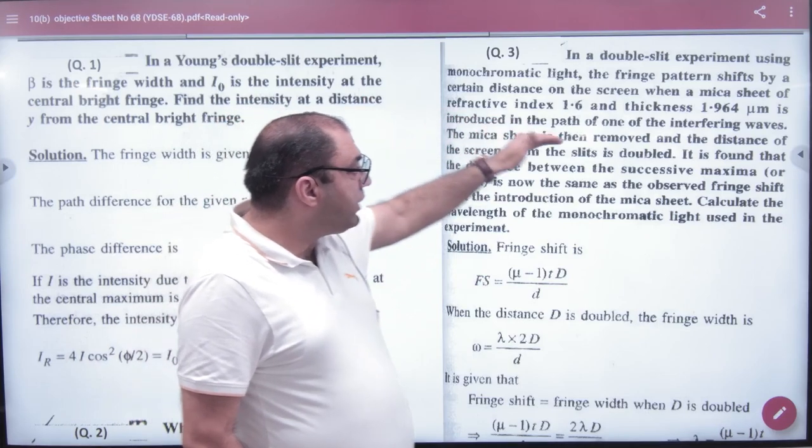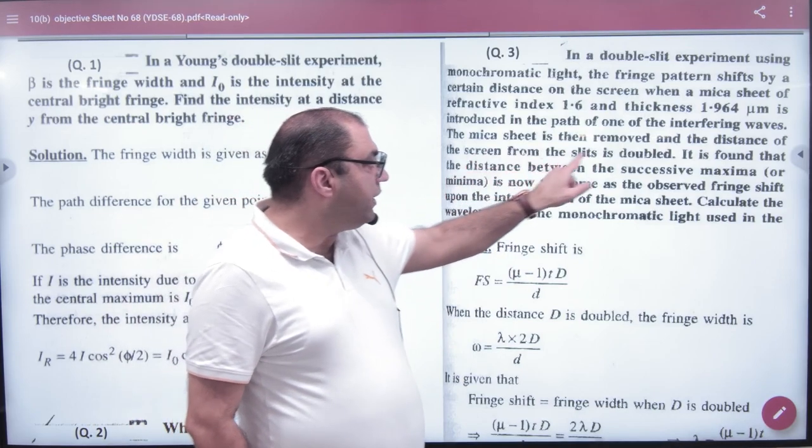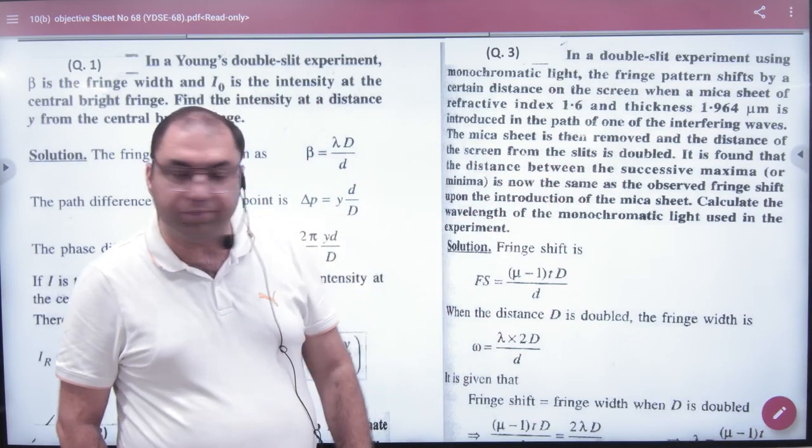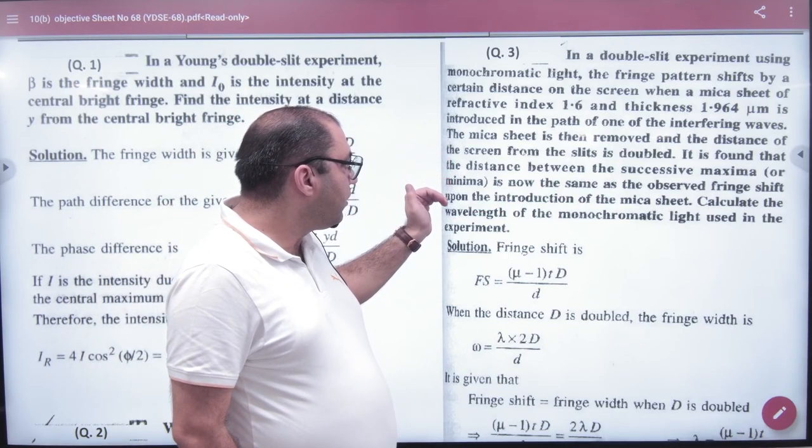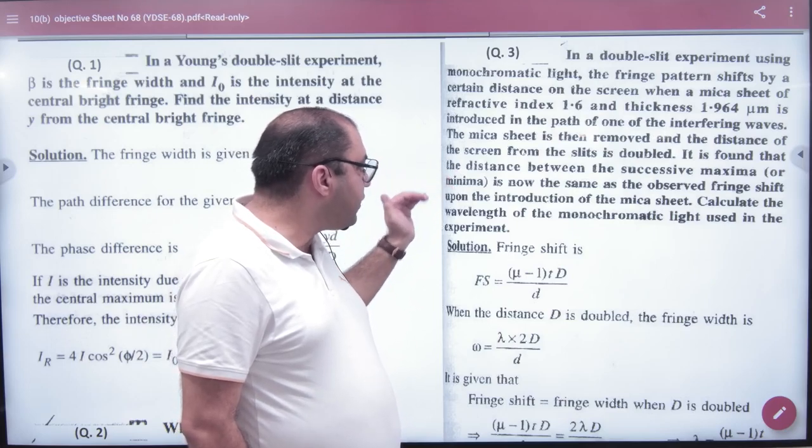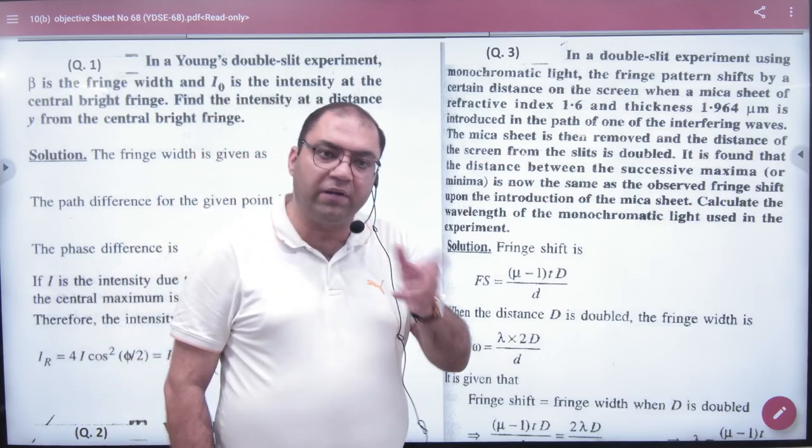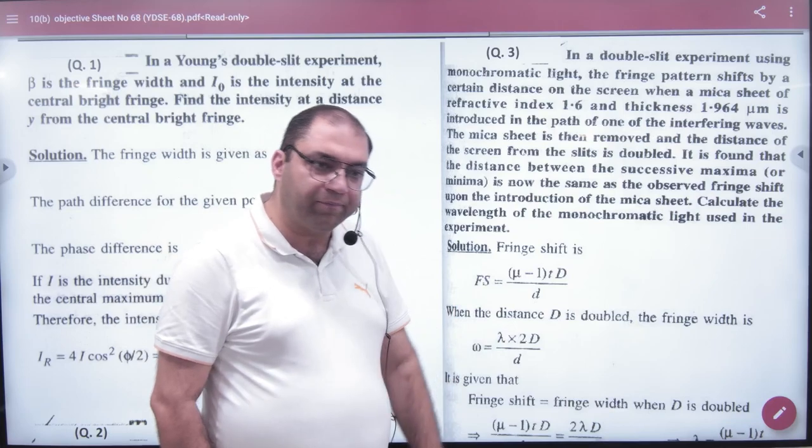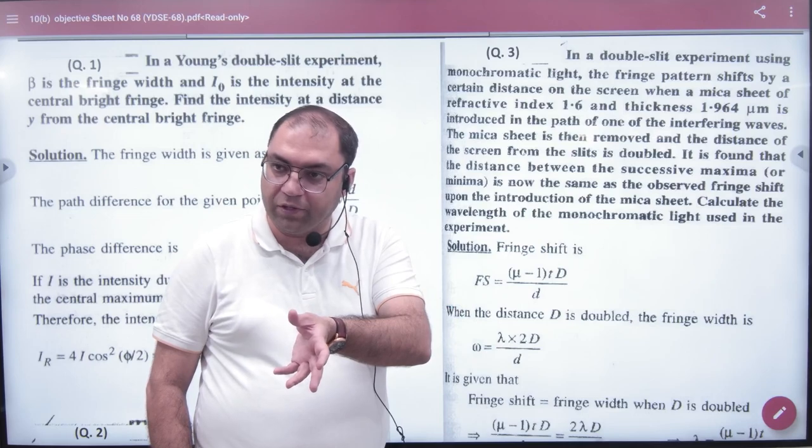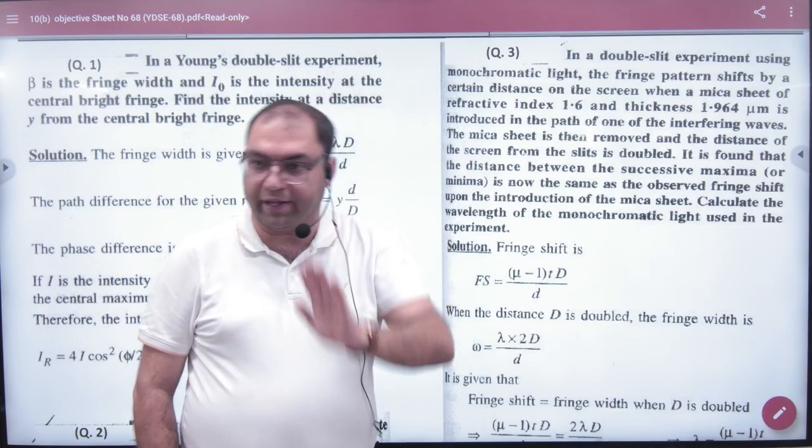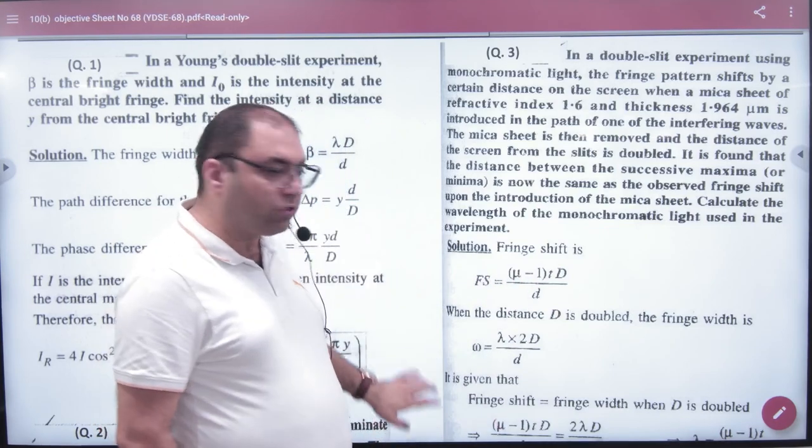Now the next case is when the mica sheet is removed. The mica sheet is removed and the distance between the screen and slit is found that the distance between successive maxima is now same as the observed fringe shift upon introduction of mica sheet. He is saying that if I have doubled the capital D, then the beta value should also be doubled. He is saying that the beta has doubled. The new value of beta came and the fringe shift was formed. The height is similar.